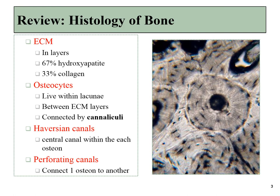I will begin by reviewing the histology of bone tissue. Bone is a type of connective tissue, and like many other connective tissues, it is primarily extracellular matrix. The ECM of bone tissue is roughly two-thirds mineral calcium phosphate crystals and one-third organic, the protein collagen.